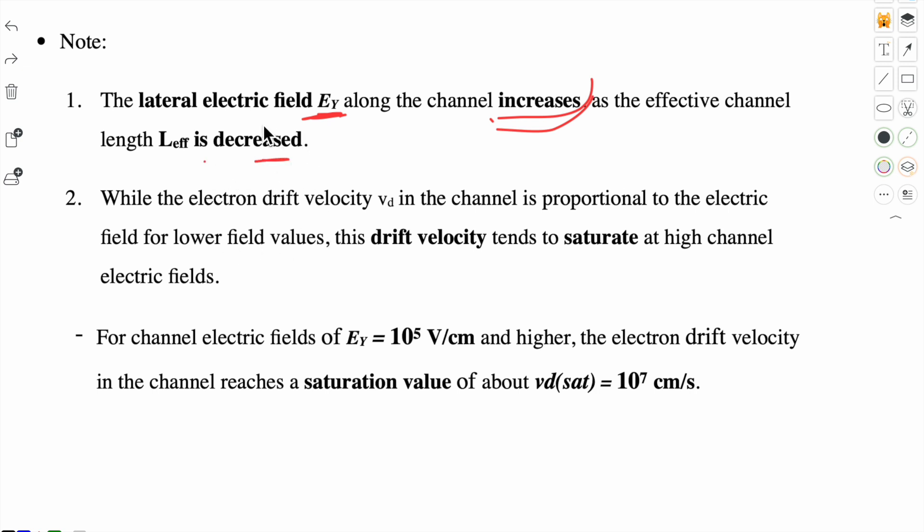The second one, when the lateral electric field has increased, the electron drift velocity tends to saturate at high channel electric field. What will be the value of this saturated drift velocity? It is 10^7 cm per second for E_y of 10^5 volt per centimeter.